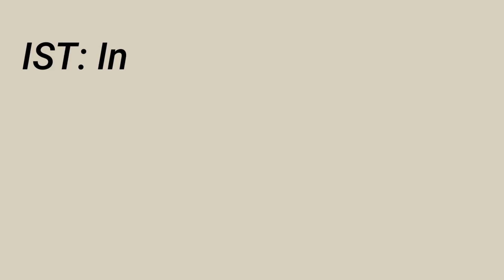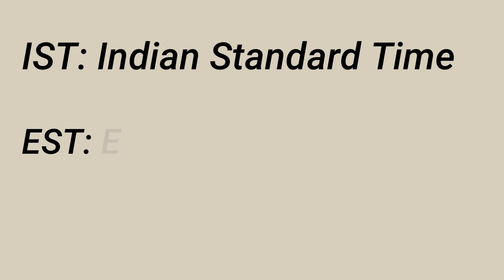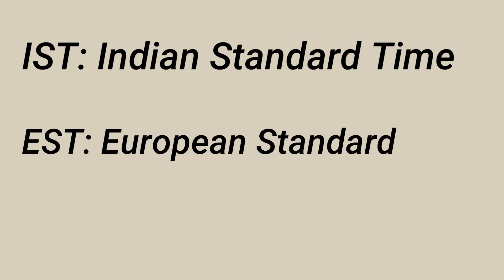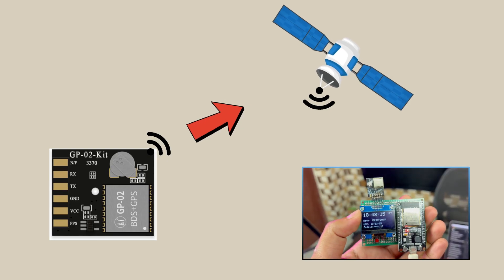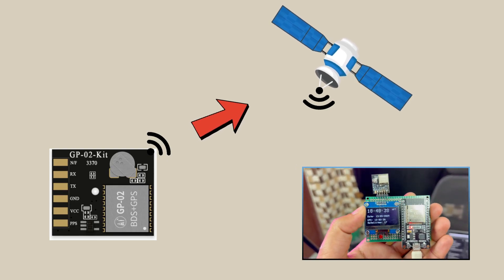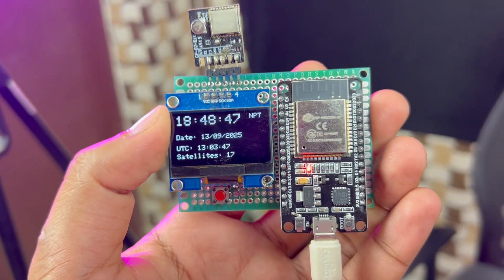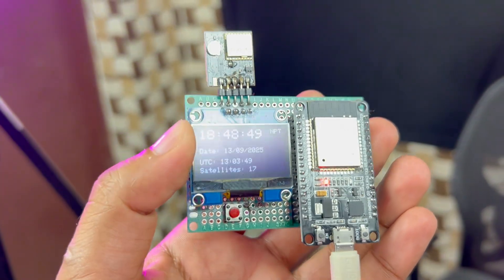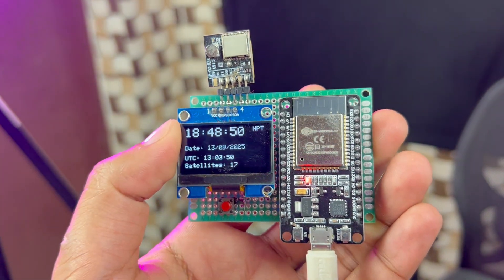You can see the time zone in IST, Indian Standard Time, European Standard Time, or literally any time zone in the world. In this project, I am using the GP02 module, which connects to the satellite, and we get the date and time in UTC from the satellite. We will display all the details — date, time, and number of satellites connected to the GP02 module — on the OLED display.